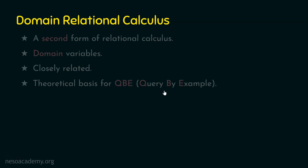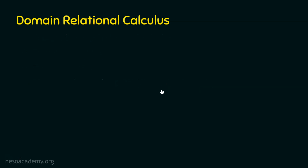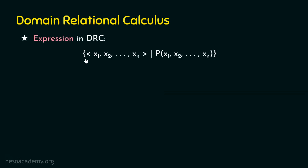Now let's see the formal definition of domain relational calculus — how an expression is defined. The expression is the set of all domain variables x1, x2, up to xn such that the predicate of x1, x2, up to xn is true. In tuple relational calculus, we used the set of all tuples t such that the predicate on t is true. But here, instead of tuple-by-tuple representation, we focus on attribute by attribute. If we have 10 attributes in a relation and want all attributes in the result, we define 10 domain variables x1, x2, x3, up to xn, and the condition for all these domain variables must be true.